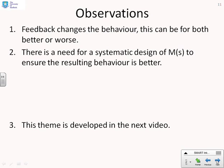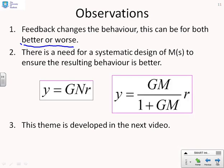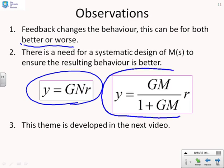So some observations. Feedback changes behavior. However, this can be both for better or worse. There's a need for systematic design of M(s) to ensure that the resulting behavior is better. So you can see GN might be relatively safe. This open loop behavior might not give me what I want but it could be safe. However, as soon as I close the loop and introduce this feedback and get GM over 1 plus GM, it's quite possible the behavior I get is awful, especially if there's a bad design for M. So I need to make sure that I've got systematic approaches to choosing M which ensure that what I get is good. And that's a theme which will be developed in the future videos.